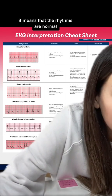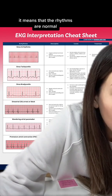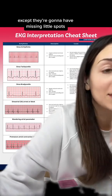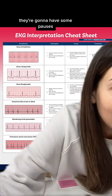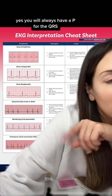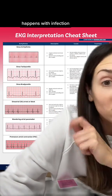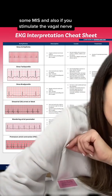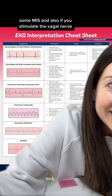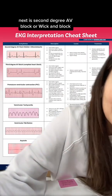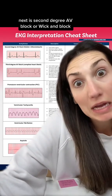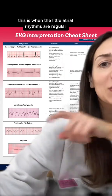This is called an SA arrest or block. The rhythms are normal except they're going to have missing spots — some pauses. You will always have a P for the QRS. Happens with infection, some MIs, and also if you stimulate the vagal nerve.